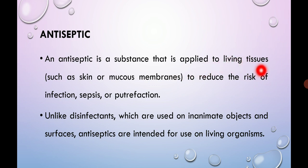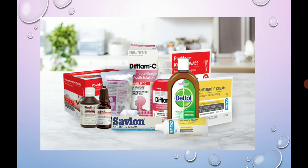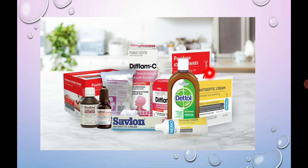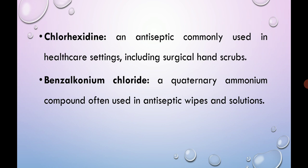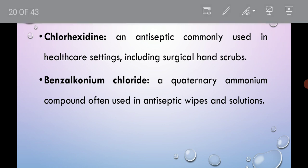The next important term is antiseptic. An antiseptic is a substance applied to living tissues such as skin or mucous membranes to reduce the risk of infection or septic condition. Examples include Dettol and Savlon — commercially available liquids that contain antiseptic agents to prevent microorganism growth on skin. Types of antiseptics include iodine-based antiseptics such as povidone-iodine, alcohol-based antiseptics, hydrogen peroxide, and chlorhexidine.